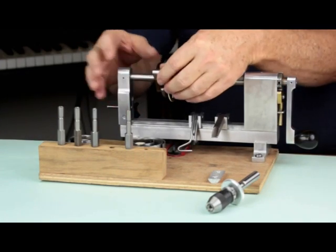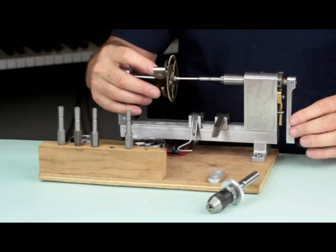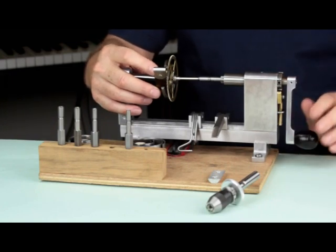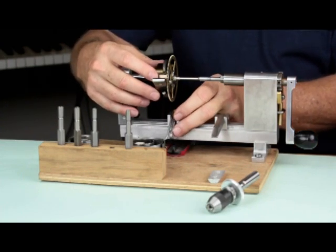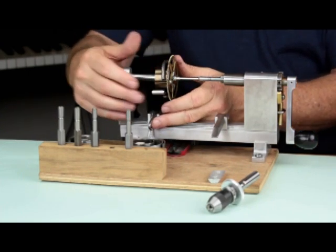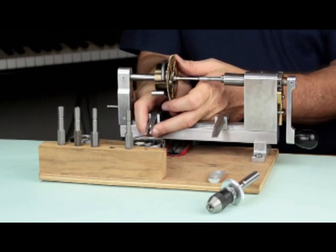We have to have some way to hold this end of the mainspring to be able to wind or unwind the spring. The Ollie Baker provides two possible methods to hold the loop. First, there is a movable fixture with several hooks that can capture and hold the end of just about any type of mainspring.